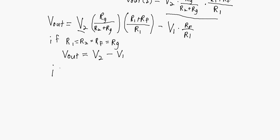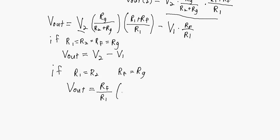Another special case is if R1 equals R2 and at the same time RF equals Rg, but R1 and RF are not necessarily the same value. What we get is Vout equal to a gain of RF over R1 times the difference between V2 and V1. So you can take the difference between those two input voltages and also apply some amount of gain based on this ratio. Hopefully you learned a little bit about differential amplifiers — I'll see you in the next video.